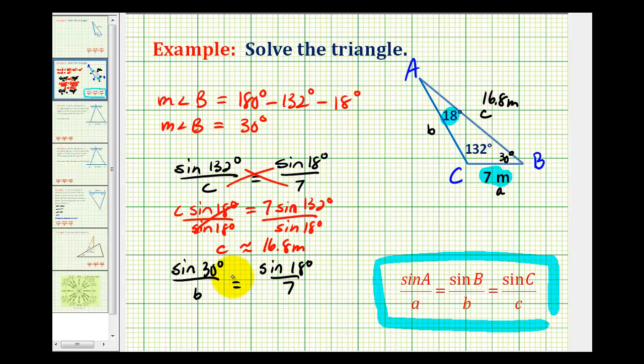And now it's the same process. We'll cross multiply and then solve for B. So we have B times sine 18 degrees must equal 7 times the sine of 30 degrees.